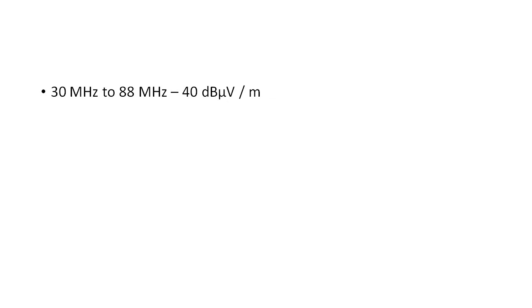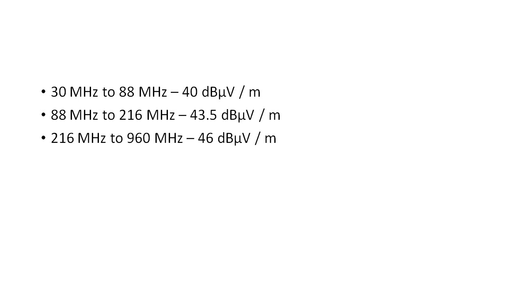Now we'll look at the class B limits. From 30 MHz to 88 MHz, the limit is 40 dB microvolts per meter. From 88 to 216, the limit is 43.5. From 216 to 960, the limit is 46 dB microvolts per meter. And above 960 MHz, the limit is 54.